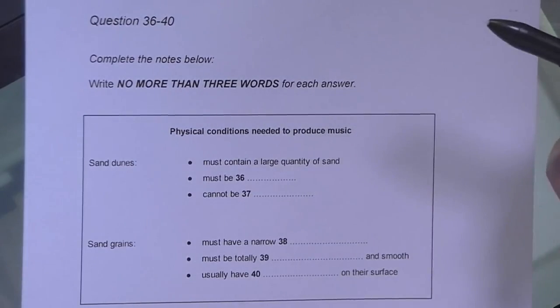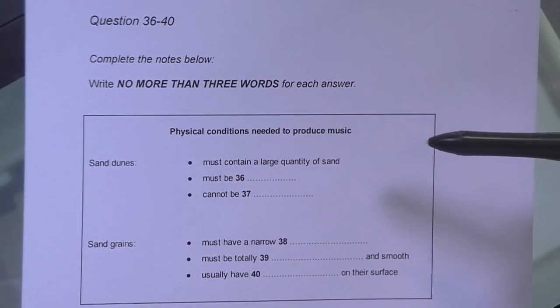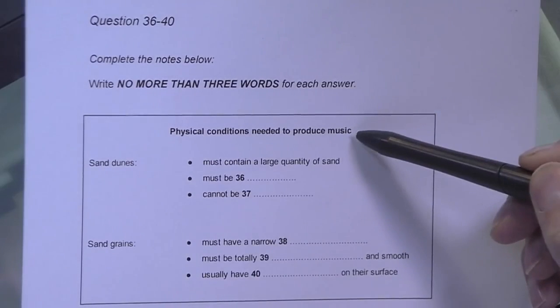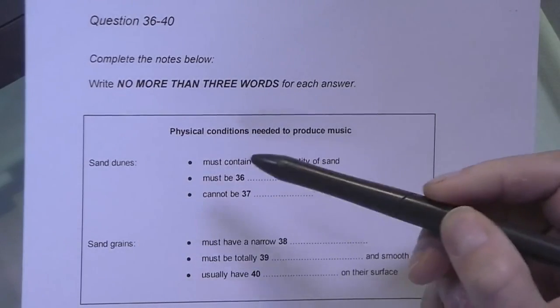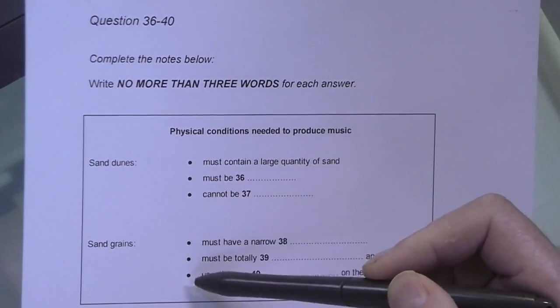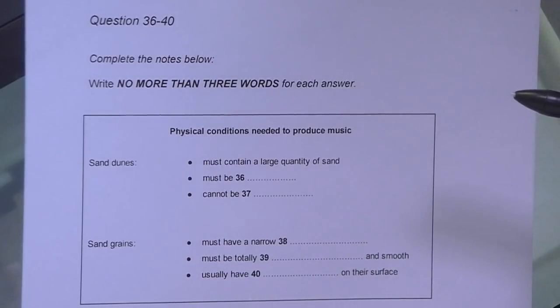If we look at the notes here, you'll notice that there is a heading, subheadings, and bullet points. The gaps are usually in the bulleted text, like this.